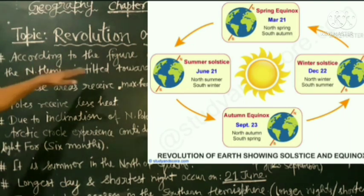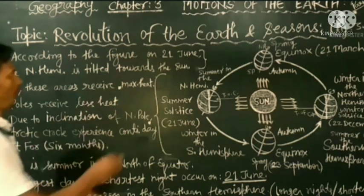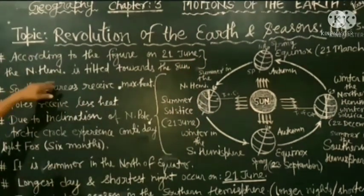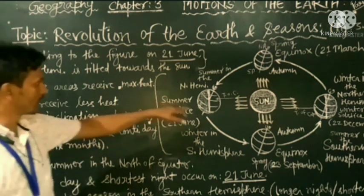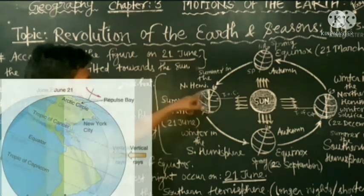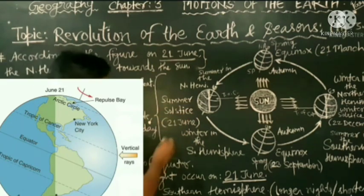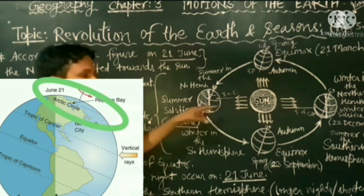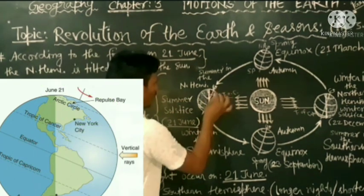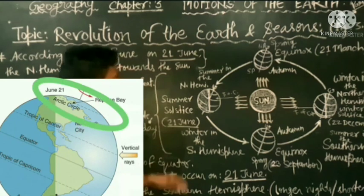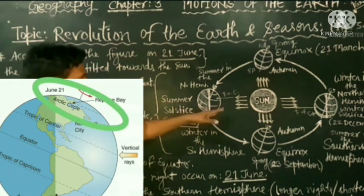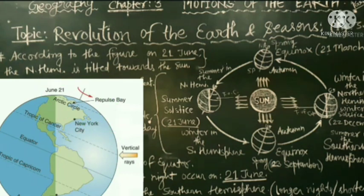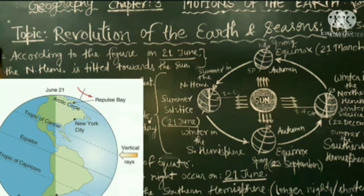According to figure 3.3, on 21st June, the northern hemisphere is inclined most towards the sun. If you see, this is the north pole and this is the Arctic Circle, and it is inclined towards the sun. Because of this inclination, the region receives most of the heat, and that is why in that region we can see summer.